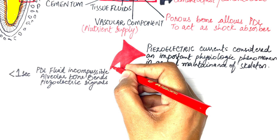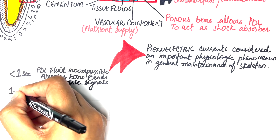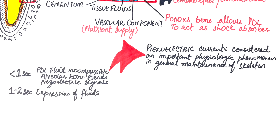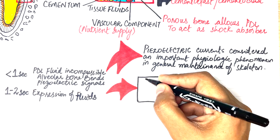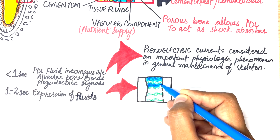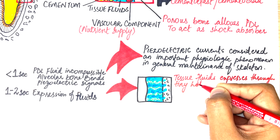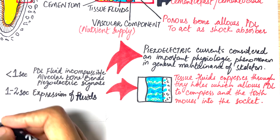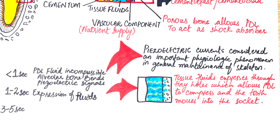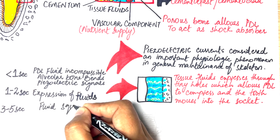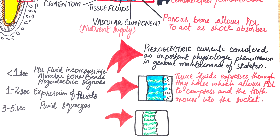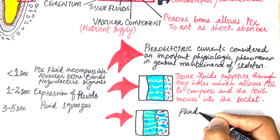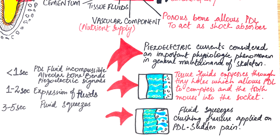When the duration of the heavy force is between 1 to 2 seconds, the fluid expresses through the tiny holes of the laminar dura, causing the ligament to compress and allowing the tooth to move within its socket. If the duration of the heavy force is between 3 to 5 seconds or longer, the fluid squeezes out of the tiny holes and crushing pressure is applied on the PDL fibers, hence the patient experiences sudden pain.